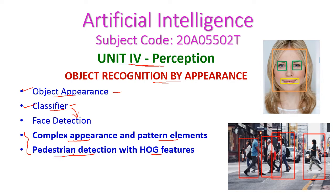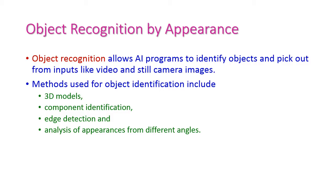Pedestrians means the people who are walking on the road. Let us see all those things one by one. Object recognition is a software program which allows identifying objects from still images. The methods used to identify objects include 3D models, component identification, edge detection, and analysis of appearance from different angles.